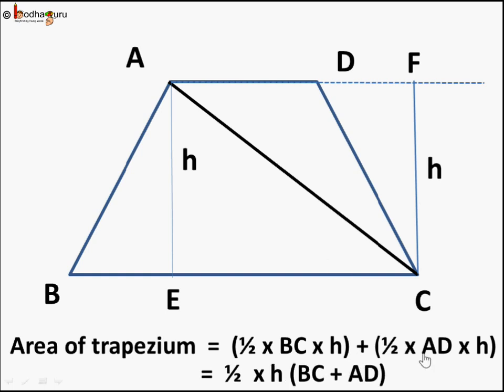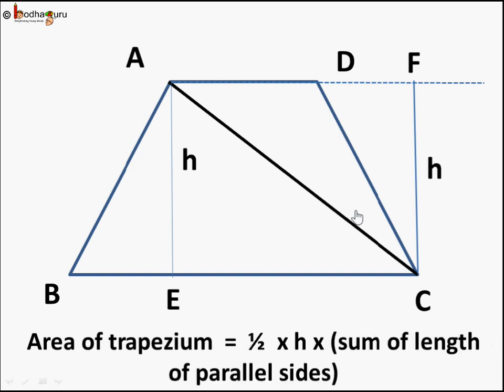And if we try to take h as the common thing and half is also common, finally the area of trapezium comes out to be half height of the trapezium times BC plus AD. And what is BC plus AD? These are the two parallel sides. So the area of trapezium can be summed as half its height, which is the distance between the parallel lines. There is only one pair of parallel lines in a trapezium. So height is that distance, h, into sum of length of its parallel sides AD and BC in this case.